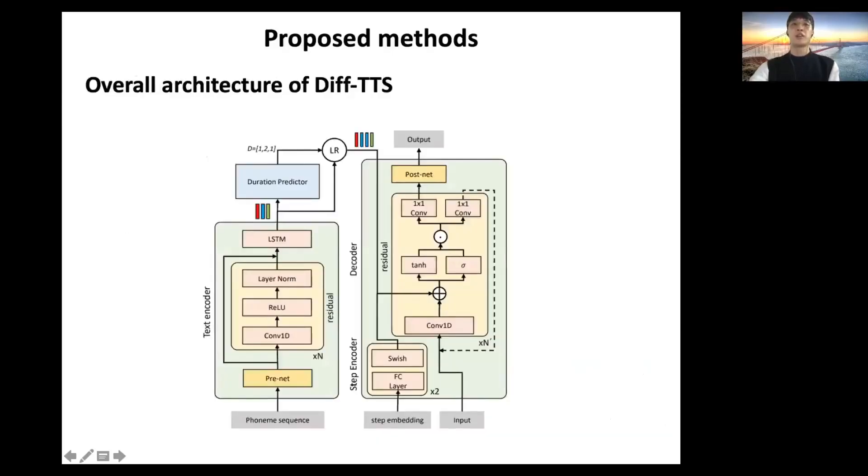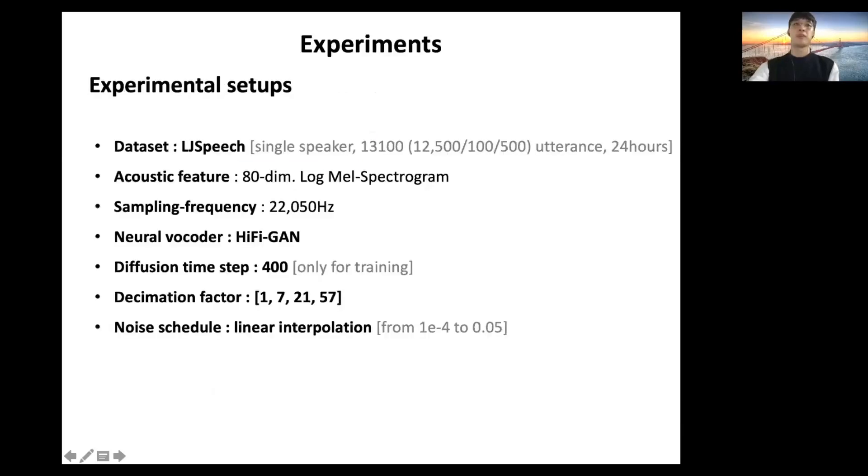The overall architecture of Diff-TTS is shown in the figure. The encoder extracts contextual information from phoneme sequences. Then, the duration predictor expands the text embedding according to label duration. Finally, the decoder predicts the T-1 step latent variable from T steps conditioned on phoneme embedding and diffusion step embedding.